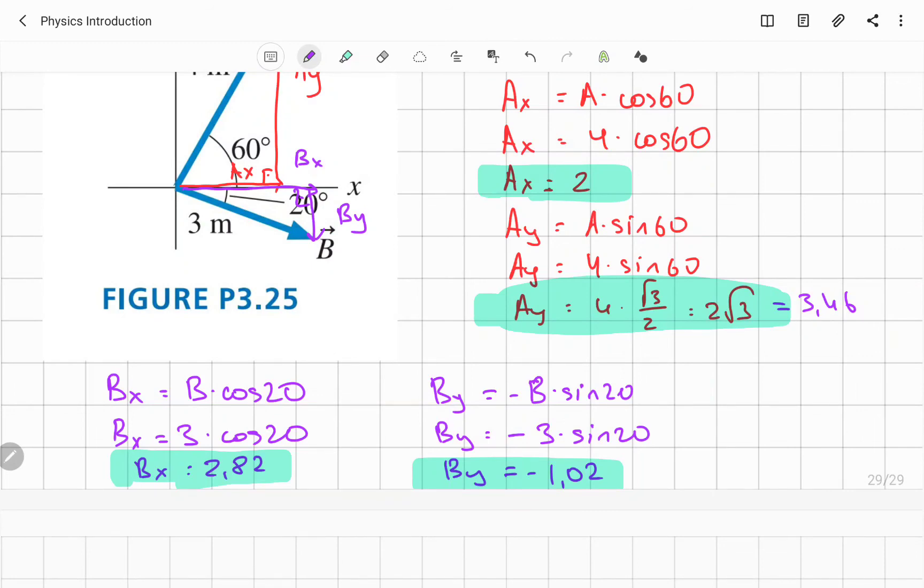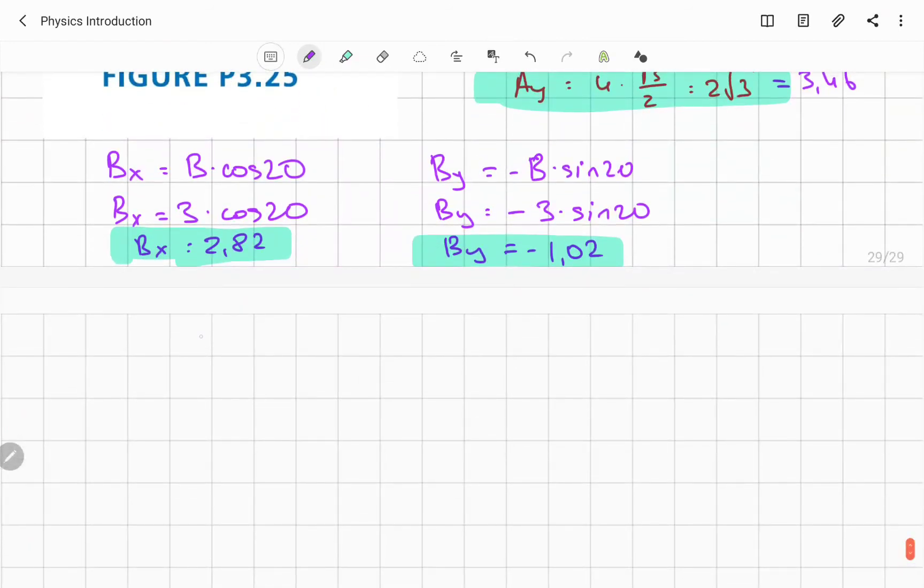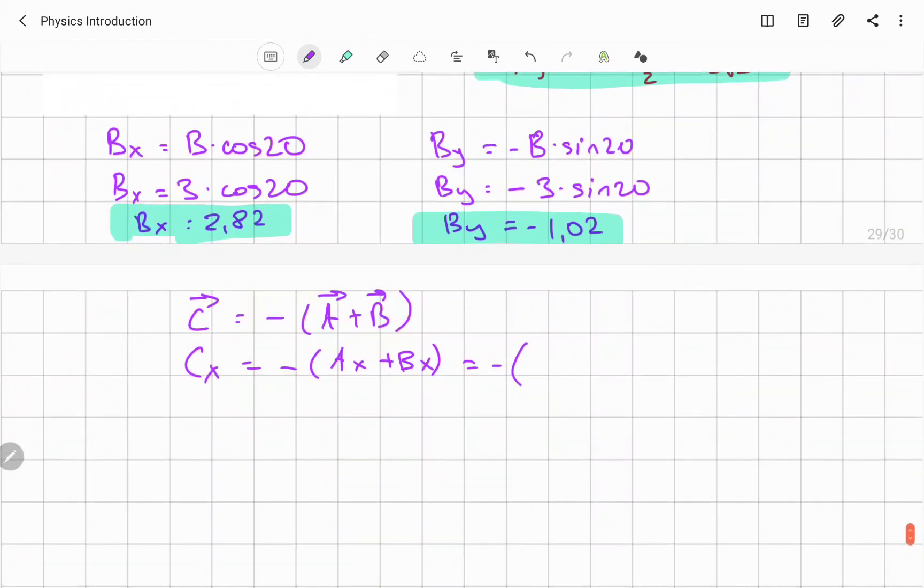Now it's time to finish this question. We know that C vector equal to minus A plus B vector. We can write it in this way. So Cx, x component for C equal to minus Ax plus Bx. Simple. What is Ax? 2. What is Bx? 2.82. So x component for C will be equal to negative 4.82 meters.